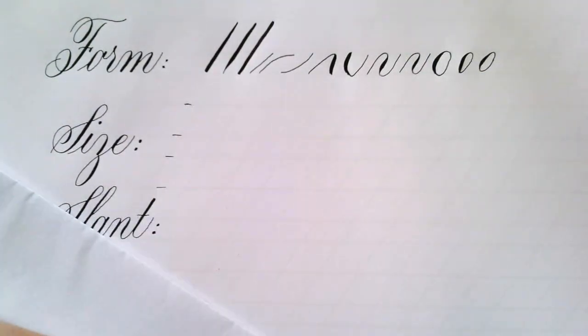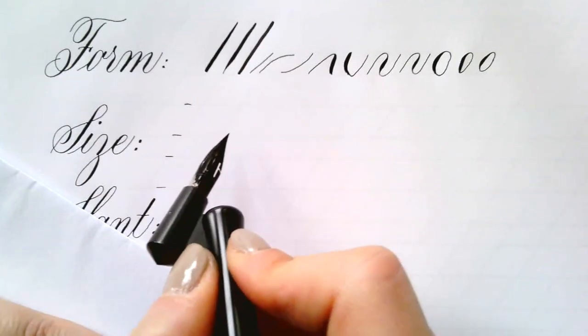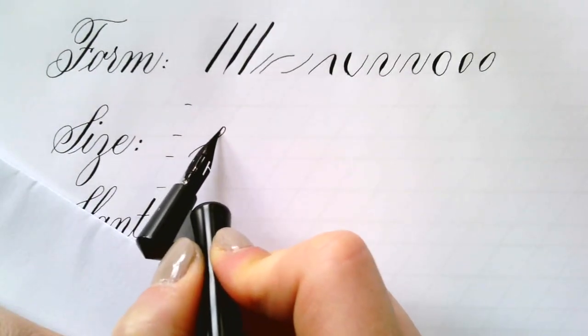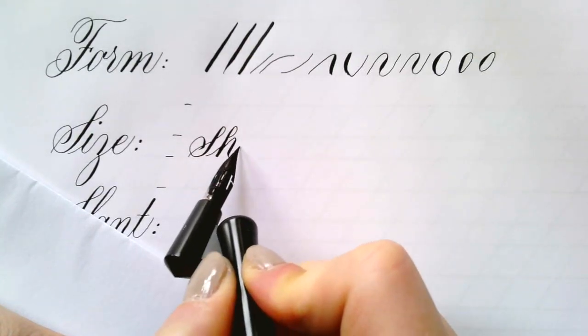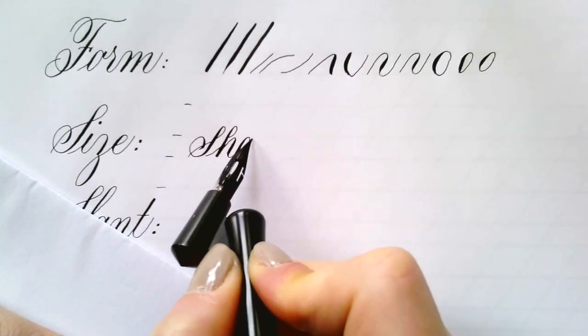When you're checking your copperplate writing for size, the most important thing is the ratio of ascender and descender to x-height. Remember, we want that to be 1.5 to 1 to 1.5.